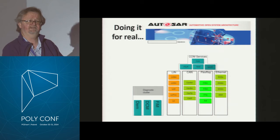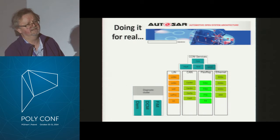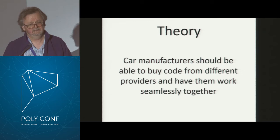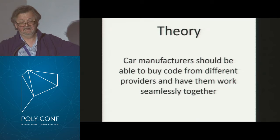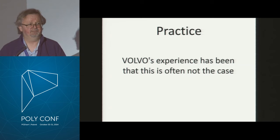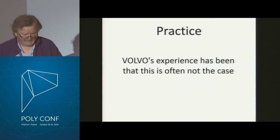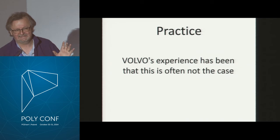You might think the problem is ensuring the basic software on all the nodes will work together. So you'd have one open source project to develop one implementation that runs on all the processors, right? That is not what the car industry has done. Rather, there are many different suppliers of this basic software, and there's a standard that specifies how they're supposed to behave. That means as a car manufacturer you can buy software from whatever provider is most convenient and just put it all together and it all works seamlessly — that's the point of a standard.